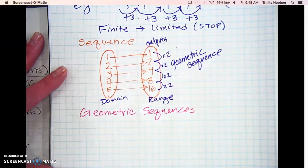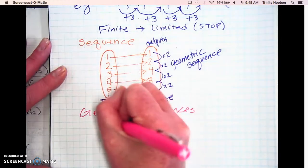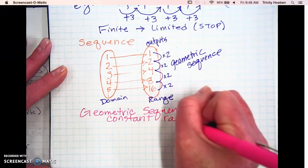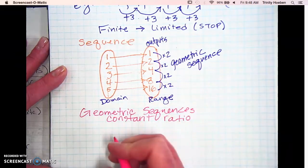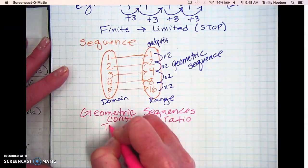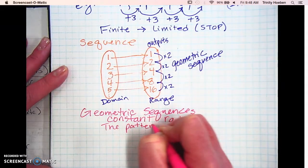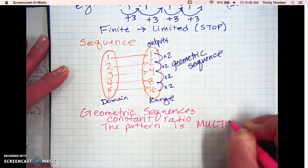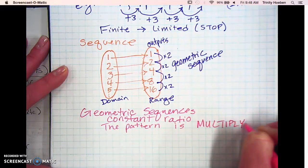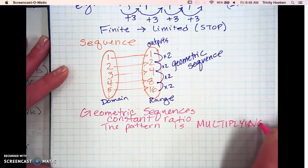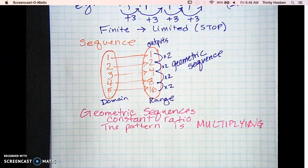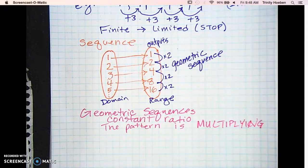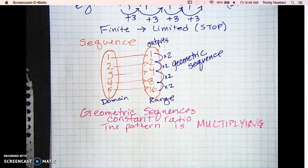Which leads us to the geometric sequences. So geometric sequences are going to have a constant ratio. And the pattern for this one is not adding. It's multiplying.